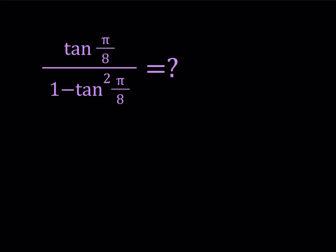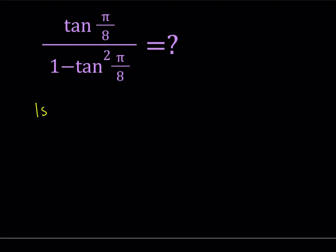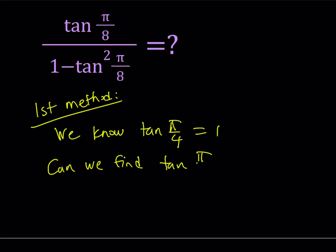I'll be presenting two methods. Let's start with the first method. My first method involves the following: notice that we know tangent pi over 4 equals 1, because that is 45 degrees. So we have an isosceles right triangle. Now the question is, can we find tangent pi over 8 from tangent pi over 4?